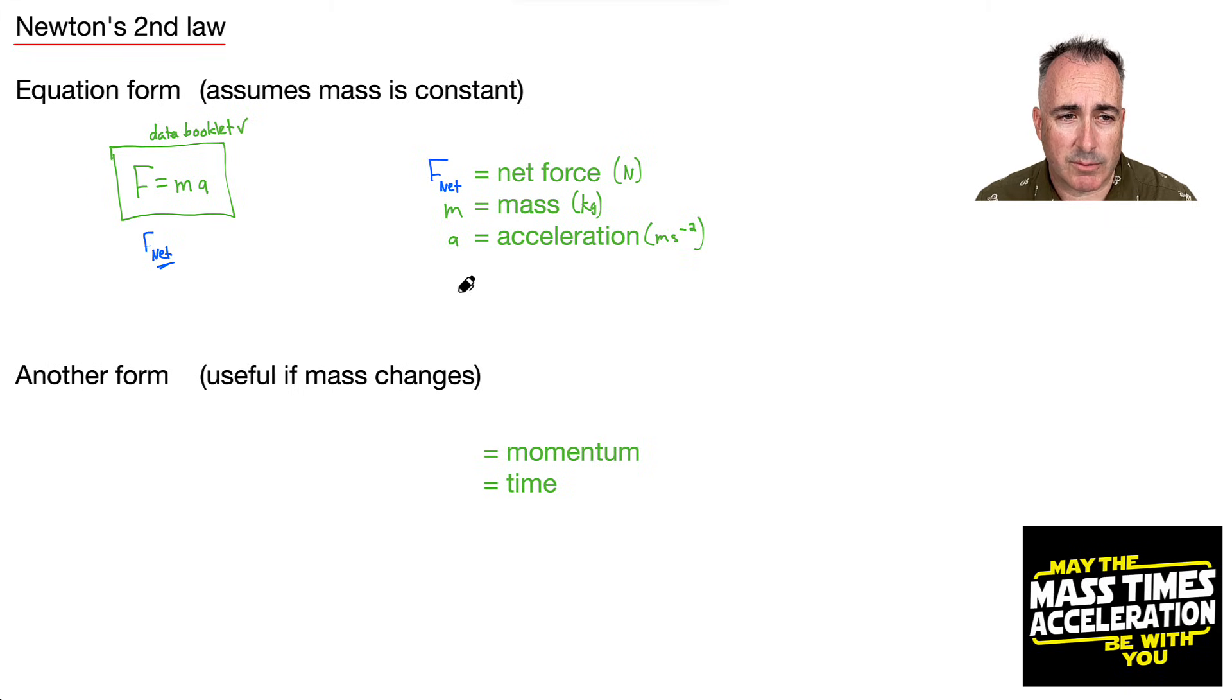So this is really important here, but also there's another form. This one here goes like this: F equals delta P over delta T. And this is also in your data booklet, so you don't have to memorize it. A lot of students try not to use this version because it looks a little bit scary, but I can tell you you need to be good at that one.